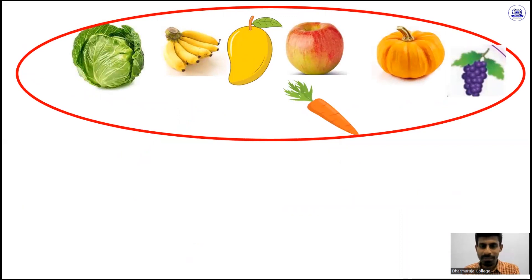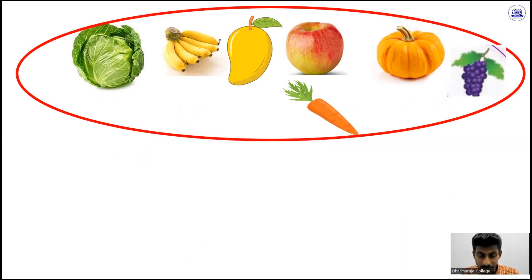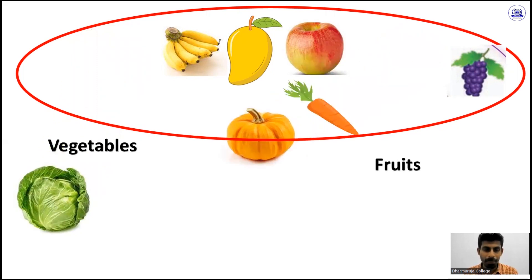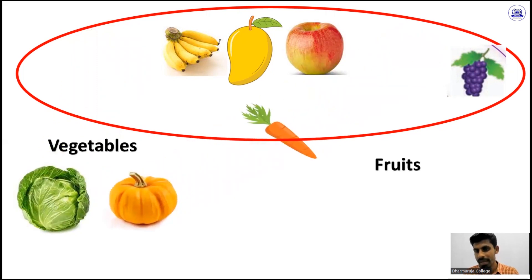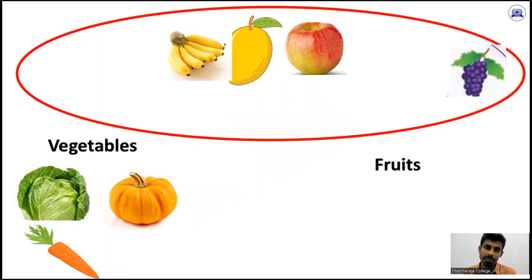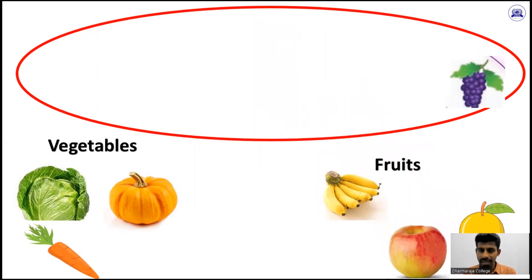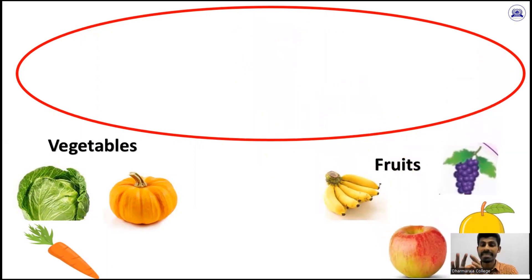So I am moving to the third example. There are some foods: cabbage, banana, mango, apple, and grapes. Can you identify what groups we can separate them into? Vegetables and fruits. Cabbage, pumpkin, and carrot can move to the vegetables group. Banana, mango, apples, and grapes are categorized as fruits.